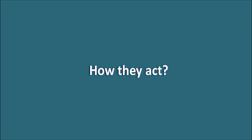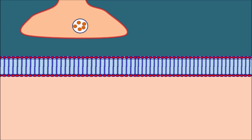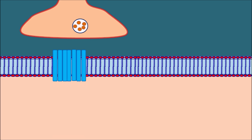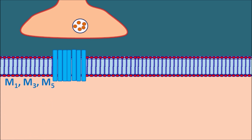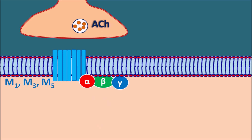Anticholinergics are mainly acting at the muscarinic receptors. At the cholinergic nerve terminals on the postsynaptic membrane, seven-transmembrane G protein-coupled receptors are present — these are the muscarinic receptors, which may be either M1, M3, or M5. They are coupled with three subunits: alpha, beta, and gamma.